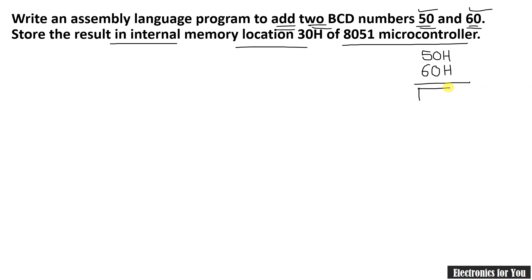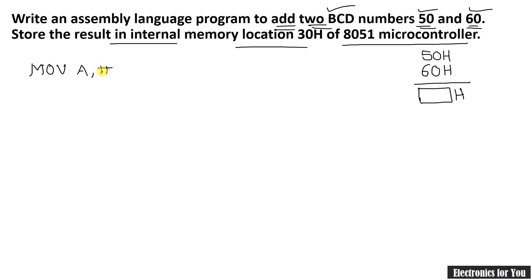Because the result is also generated in hexadecimal, we have to convert it into a BCD number. To add 50 and 60, we first copy the first number into the accumulator using the MOV instruction: MOV A, #50.